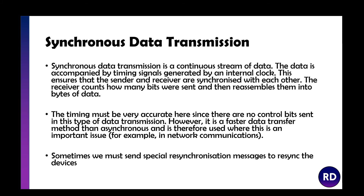Synchronous data transmission is a continuous stream of data timed by an internal clock which sends timing signals, ensuring the sender and receiver are synchronised. It counts how many bits were sent and reassembles them into bytes of data. However, the timing must be very accurate — because there are no start or stop control bits, the system must know exactly which part of the bitstream is being sent at any moment. It's a lot faster and is used when timing is critical, such as in network communication. If it does get out of sync, a special resynchronisation message is sent to resync the devices.